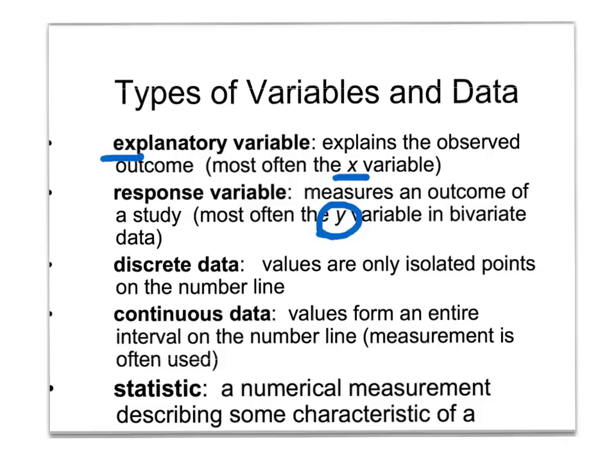Discrete data are data that are only isolated points. This is most common with count data. If I'm counting the number of people who are overweight, it doesn't make any sense to say I have three and a half people who are overweight. Whenever a decimal number does not make sense, it would be considered discrete data, and this happens a lot in count data.